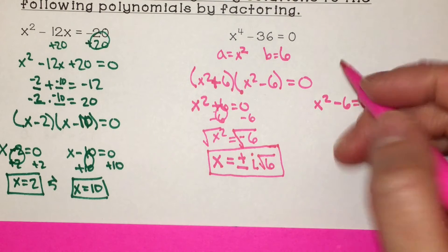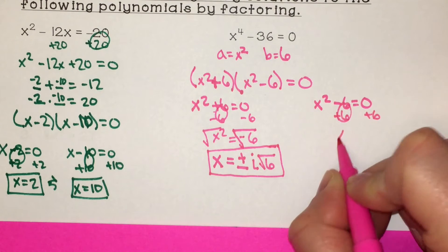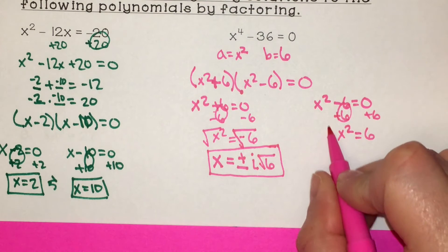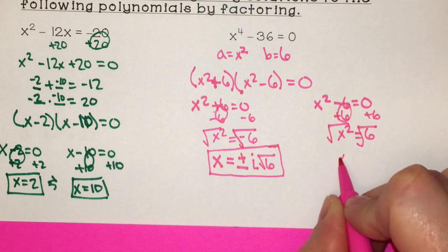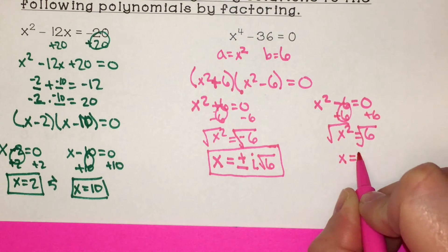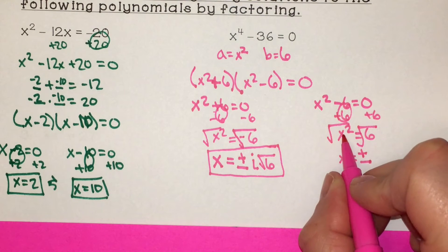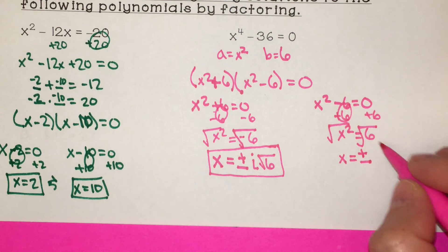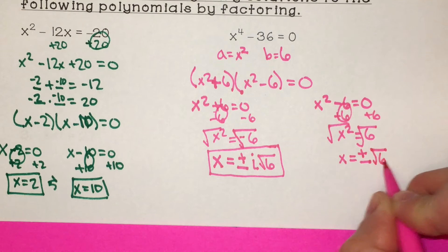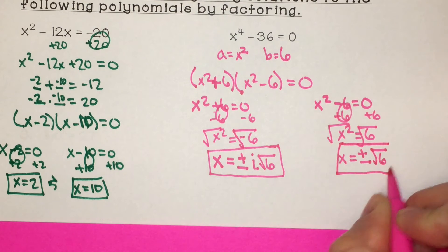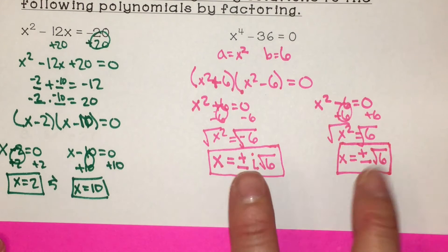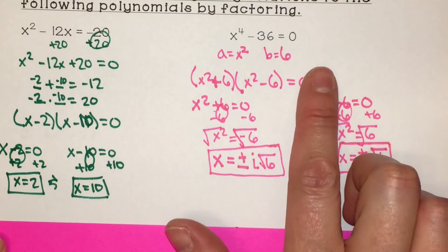For x squared minus 6 equals 0: add 6 to both sides to get x squared equals 6. Take the square root of both sides — we have to account for both positive and negative. The square root of 6 cannot be simplified, so x equals square root of 6 and negative square root of 6. There are four answers altogether for this polynomial.